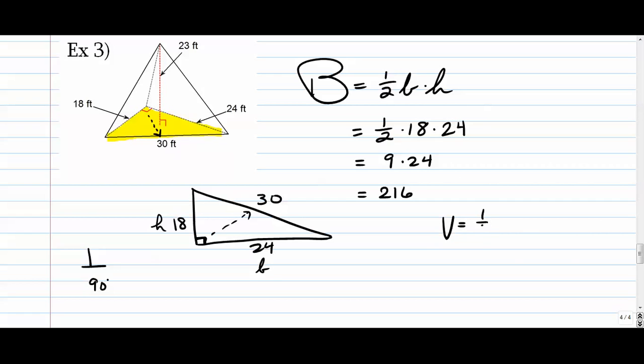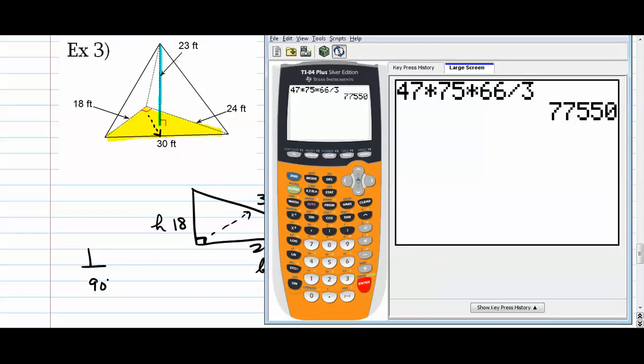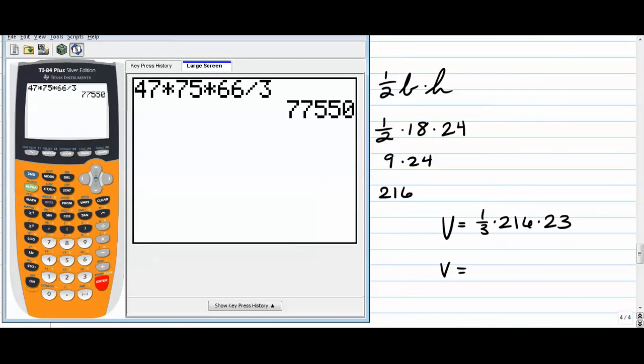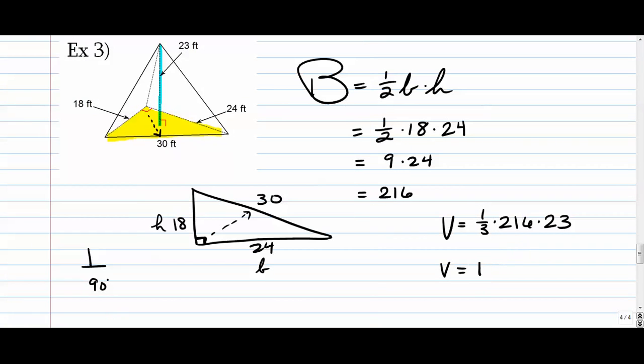The volume formula takes that two-sixteen and multiplies it by the height. In this case, you can see the height hopefully is really simple. That is going straight down to the base at a right angle. That's twenty-three. And we're good to go. The next step in the process is to get your calculators out here. And we go two-sixteen times twenty-three divided by three. Remember, multiplying by a third is the same as dividing by three. So we get sixteen-fifty-six. And that's cubic feet. So that would be the volume, the amount of stuff that you can fit inside your pyramid.